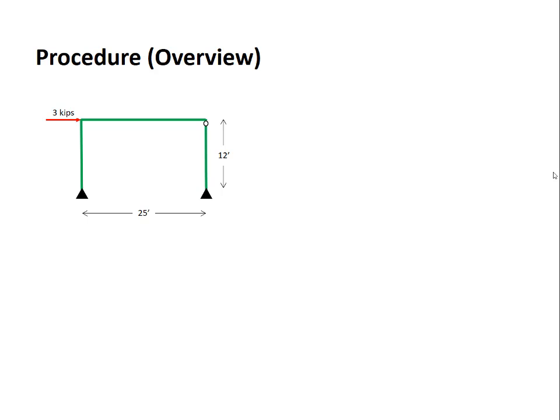We'll start out with a qualitative overview of the procedure. This is the frame that we use in the example. It's a portal frame with a hinge in one column, a 3 kip lateral load, and the dimensions given there.